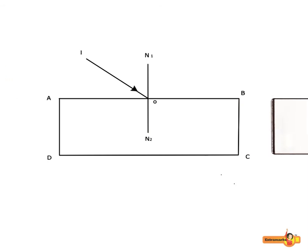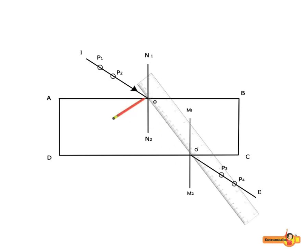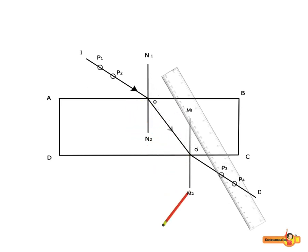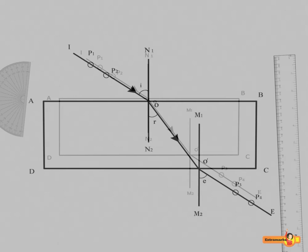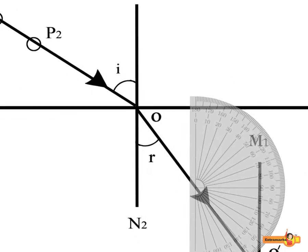Now, remove the glass slab and the pins. Mark the pin points P1, P2, P3 and P4. Join the points P3 and P4 to represent the emergent ray O'e. Join O, O'. The ray O, O' is the refracted ray. Measure the angle of incidence I, angle of refraction R and the angle of emergence E.